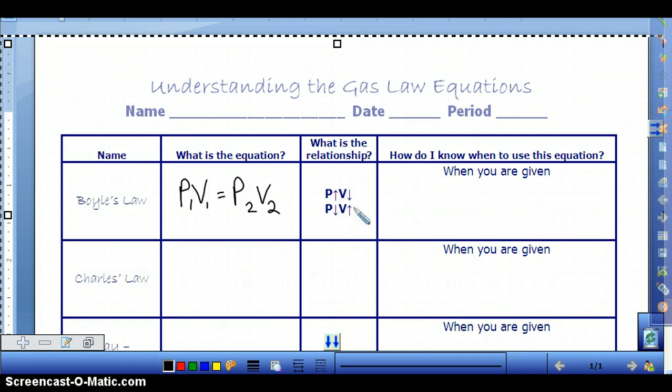And you can use Boyle's Law when you are given pressure. And pressure has a lot of different units. You might see ATM for atmosphere, you might see millimeters of mercury, you might see KPA, that stands for kilopascals, you might even see torr. So you can write those down. And then you also have to be given volume. And most commonly, you'd see milliliters or liters for your volume.